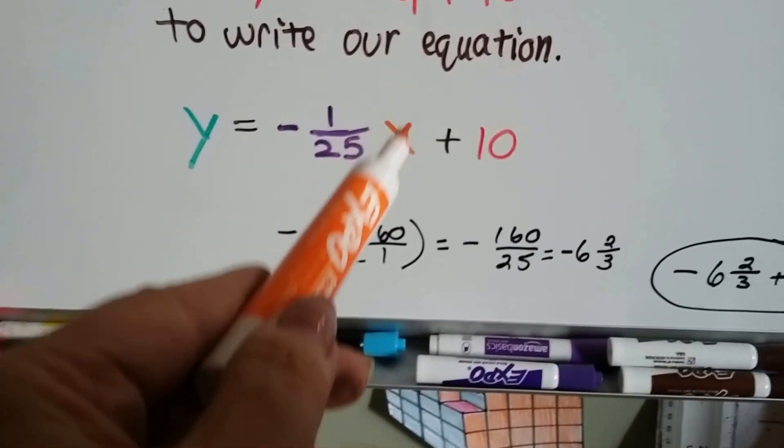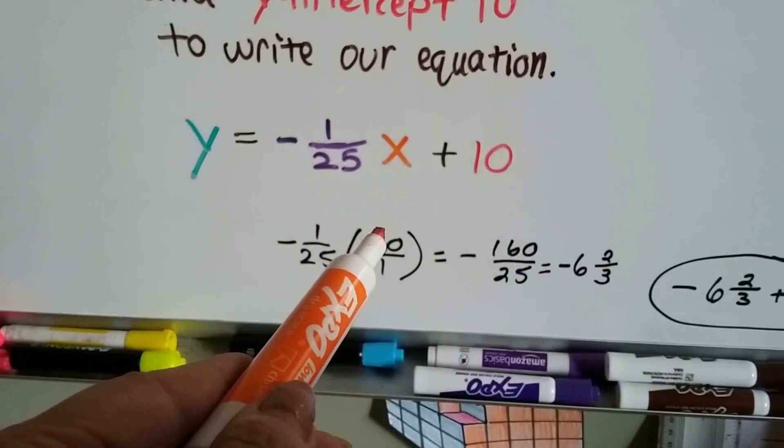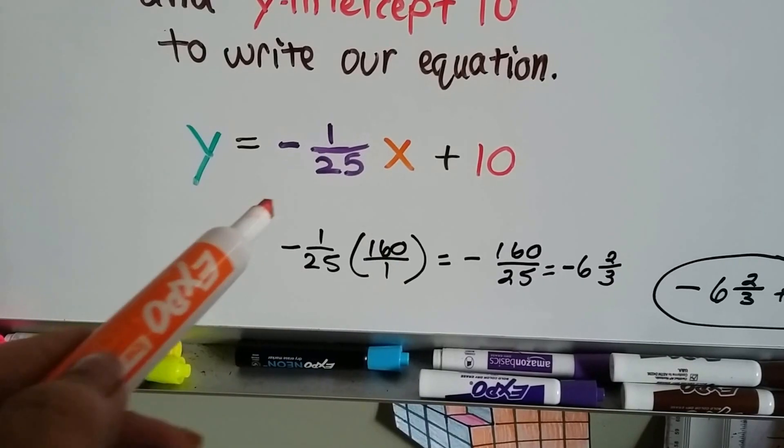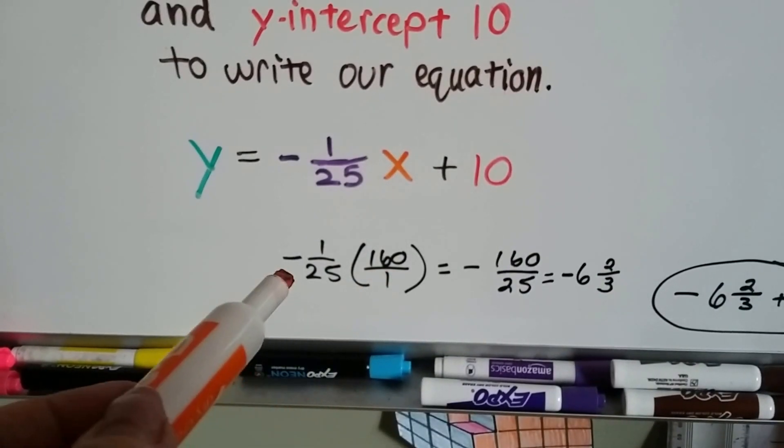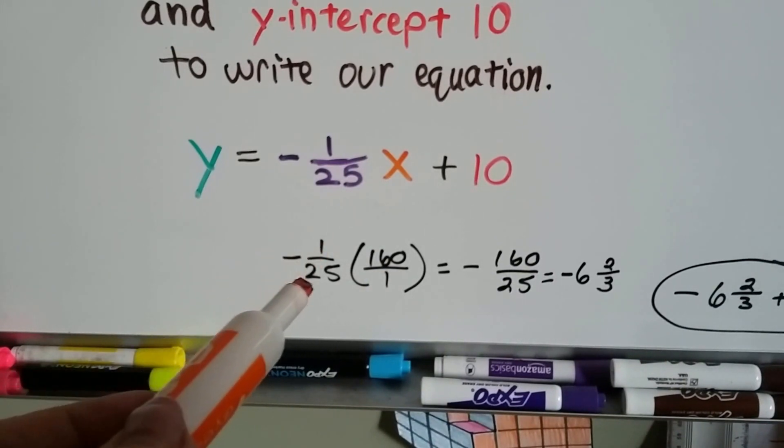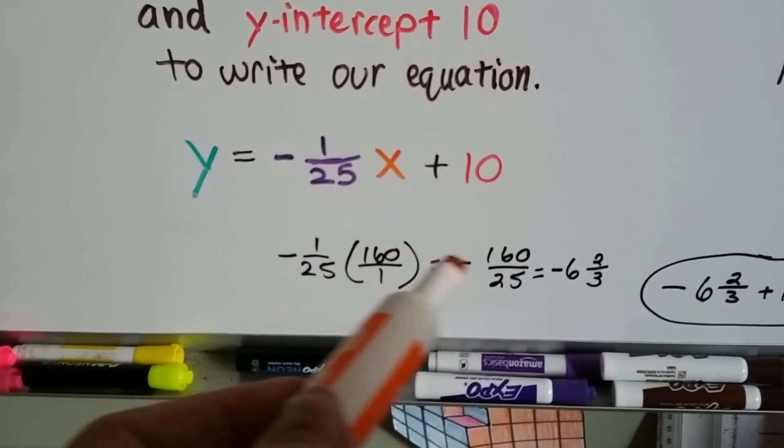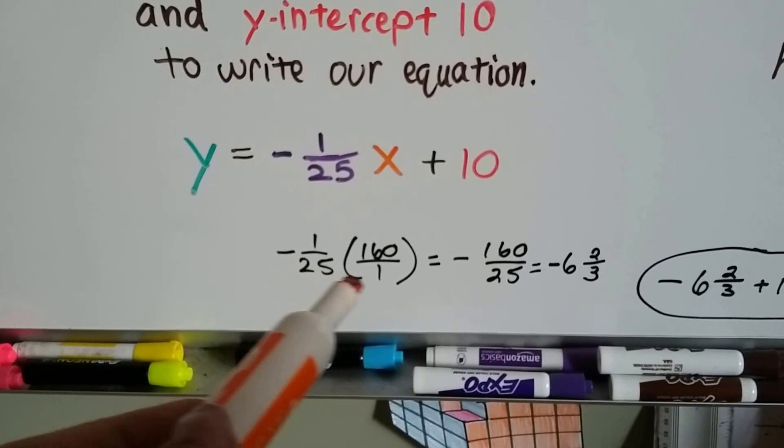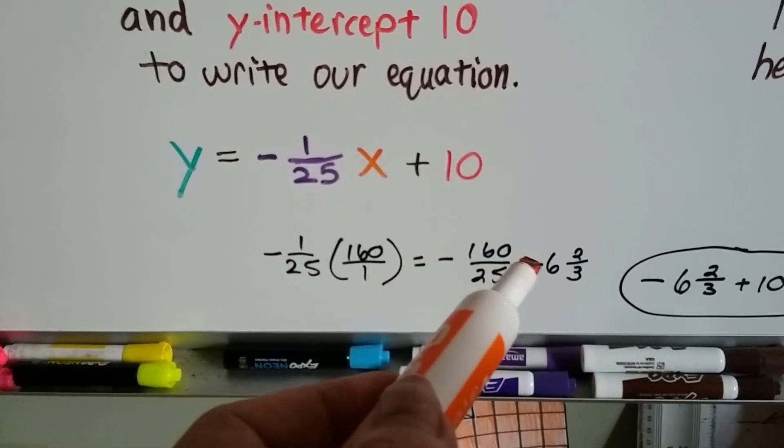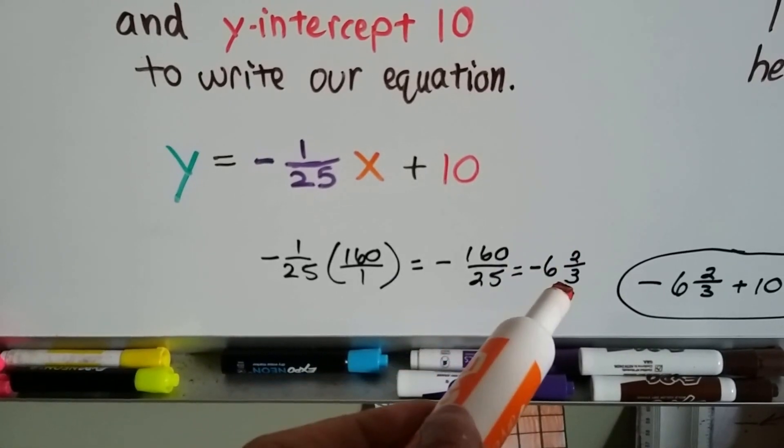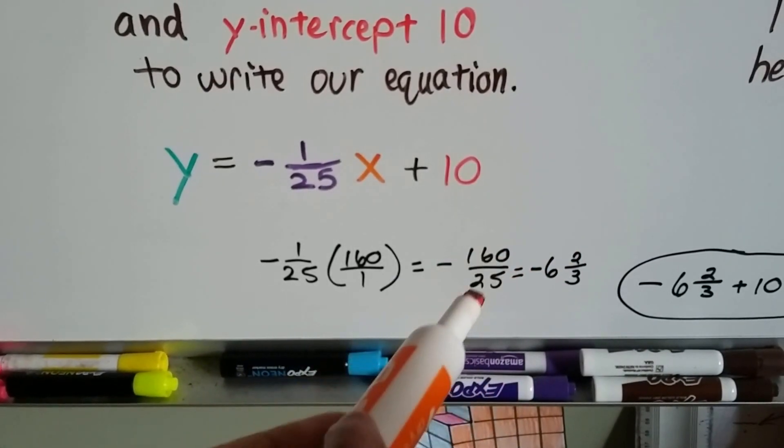x is the amount of miles that she's driven. So we need to multiply the 160 miles to her grandparents' house by the negative 1/25. 1 times 160 is 160, and 25 times 1 is 25, and it's negative. So we have negative 6 and 2/3 when we simplify it.